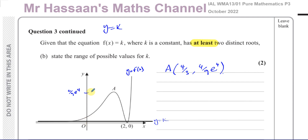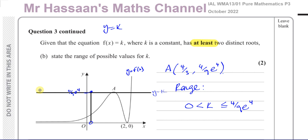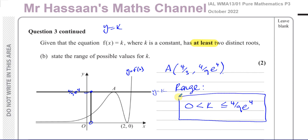So the range of values of k for at least two distinct roots is: 0 < k ≤ (4/9)e^4. When k is above zero, there are three distinct roots all the way up to when k = (4/9)e^4, where you have this root and a repeated root together — making at least two distinct roots. That is the answer to question 3, part B.